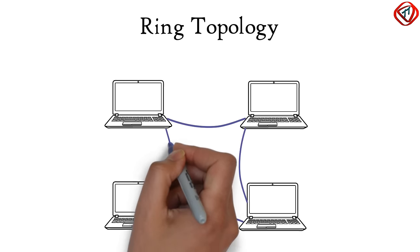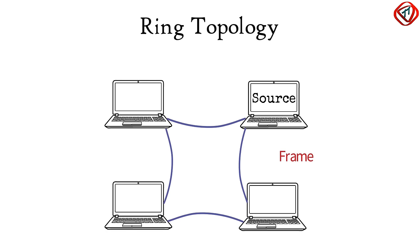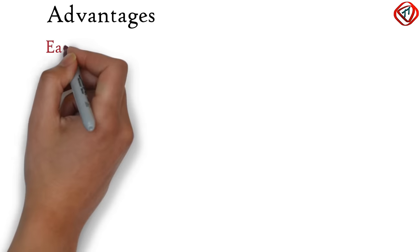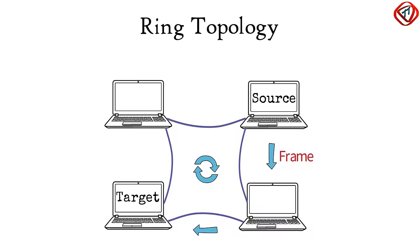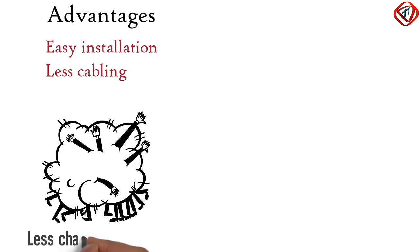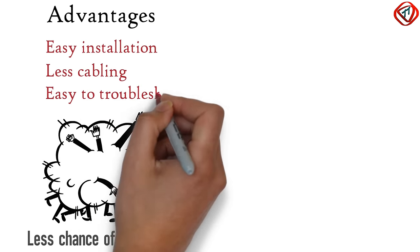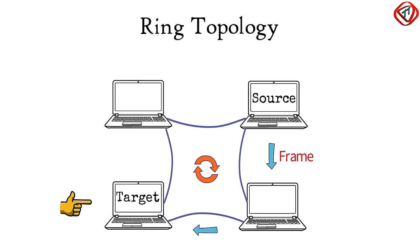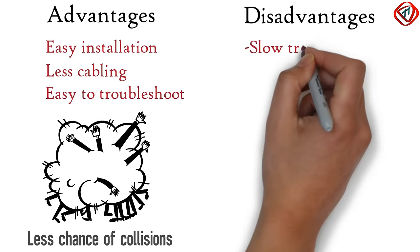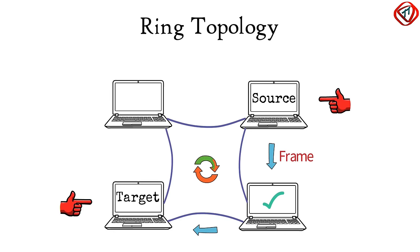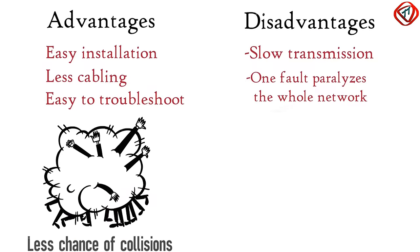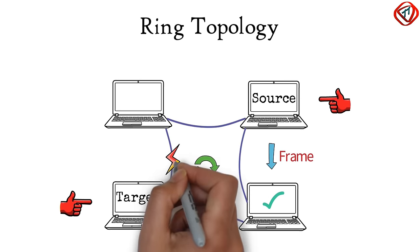Now, ring topology. In a ring topology, each computer connects to two adjacent computers to form a ring. Data transmitted by one computer moves from one computer to another in a circular fashion to reach its final destination. The advantages are easy installation and less cabling. Data moves in one direction, which reduces the chances of data packet collisions. Ring topology is relatively easy to troubleshoot, as we only need to locate a computer that stops receiving data from its upstream neighbor. However, each data frame has to pass through all computers between source and destination, making transmission slower than star topology. One fault paralyzes the whole network, and it is difficult to reconfigure because we need to break the ring to add or remove computers.